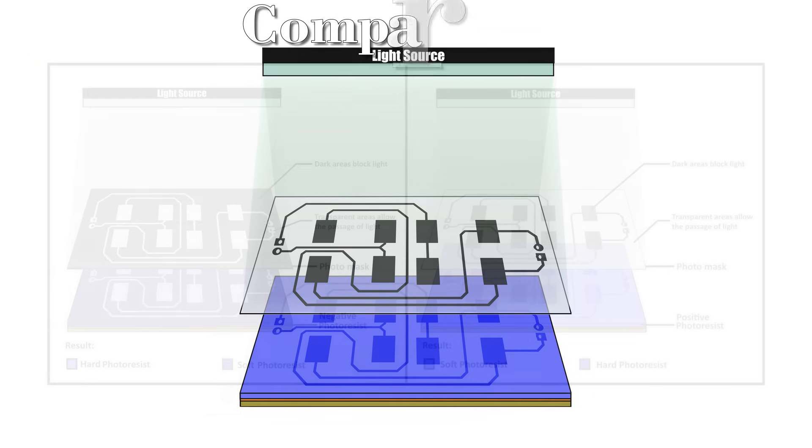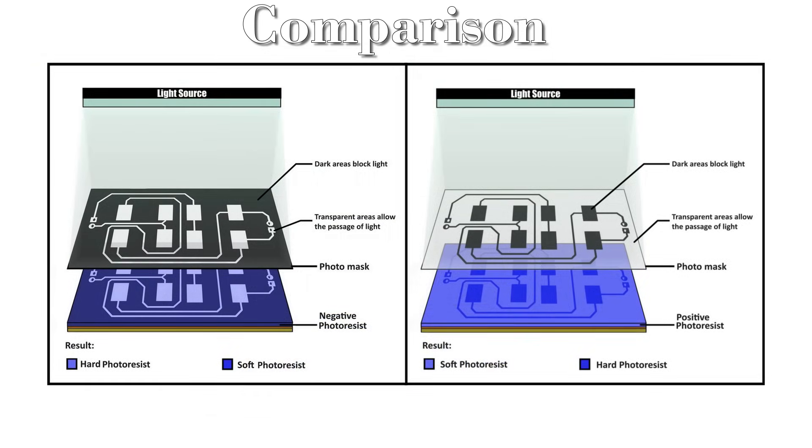Now let's compare both types of photoresist and their applications. Both negative and positive photoresist enable the transfer of patterns onto the PCB, but they exhibit different characteristics. Choosing between the two depends on specific requirements and considerations due to their respective pros and cons.